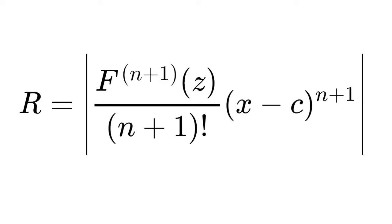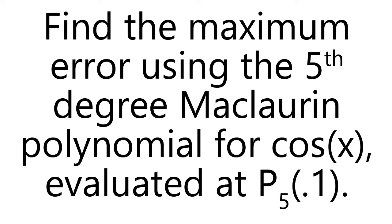And now on to the example. All right, so this is the example we're doing. We are going to find the maximum error, which is the Lagrange form, using the fifth degree Maclaurin polynomial for cos(x).